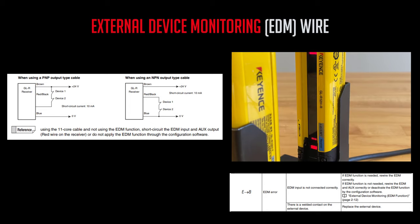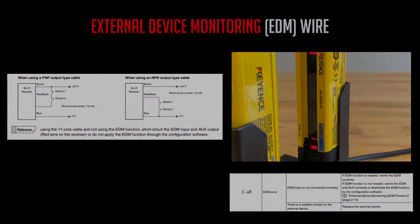An E8 or EDM error is similar to an E7 interlock error, but instead you may have incorrectly wired your red and black striped wire on the receiver side. Again, take a look at your GLR user's manual to determine how to wire this properly in order to avoid this error code.